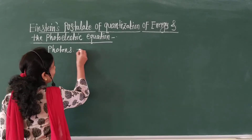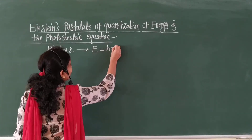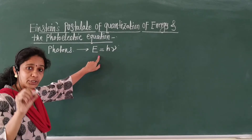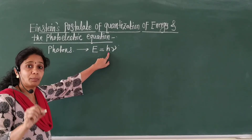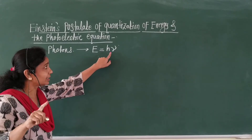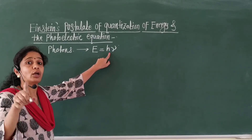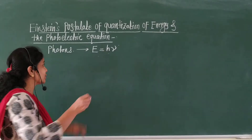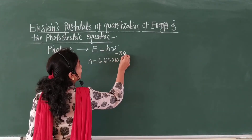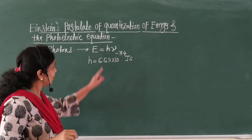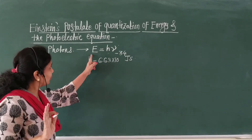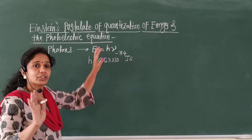The energy of each photon is E = hν, where E is the energy of the photon and h is Planck's constant. It was defined by the scientist Planck in his model of black body radiation. Its value is h = 6.63 × 10⁻³⁴ joule·second. And ν is the frequency of incident radiation. Therefore, energy of photon E = hν.